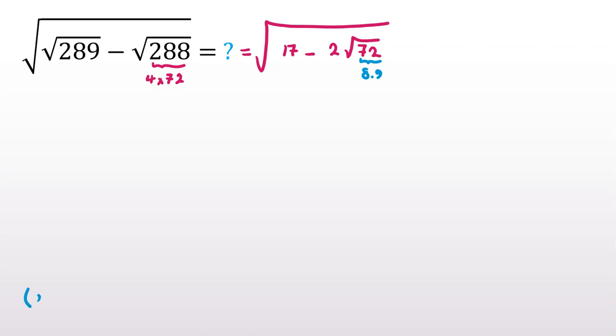You want to use a famous and basic identity: (a - b)² = a² + b² - 2ab. So try to write the thing inside the square root like (a - b) whole squared.